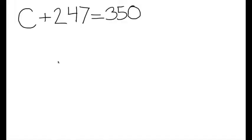Let's use the problem C plus 247 equals 350. The first step is to write your problem and draw your number line. Next, place your variable on the far left of the number line.